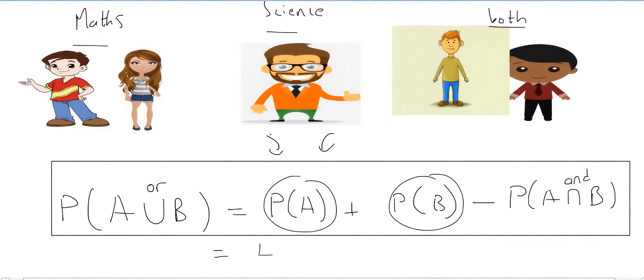And then for A, that was maths, I said 4, and for science, that was 3, and then for the people who did both, that was Harry and Todd, where I said 2. But I didn't mention everything.